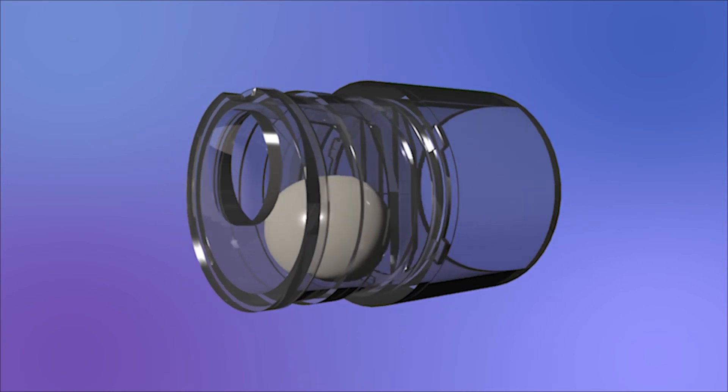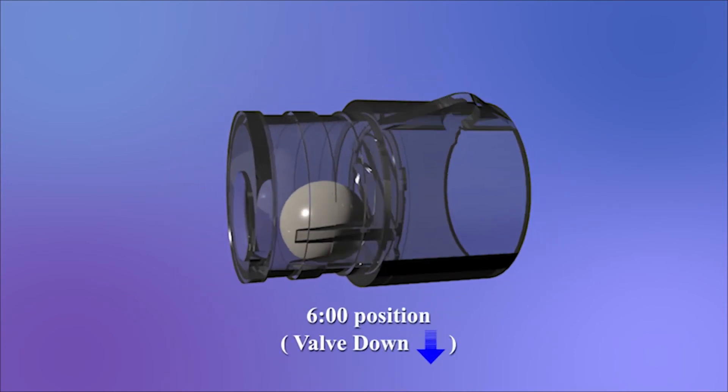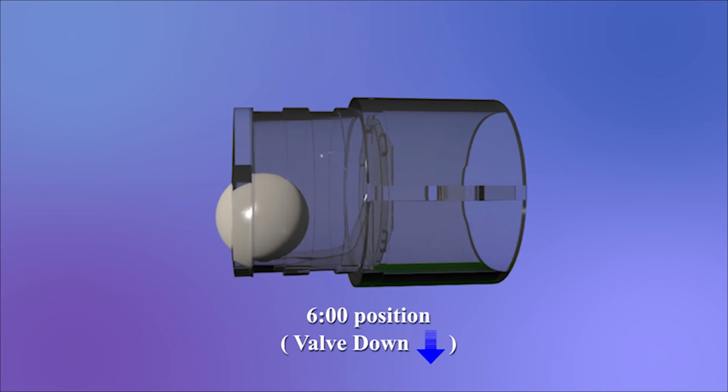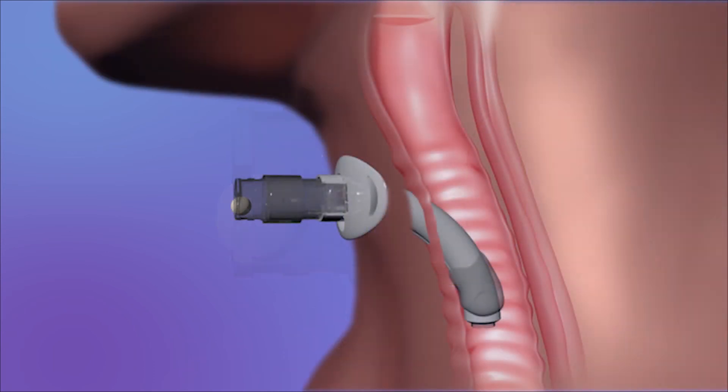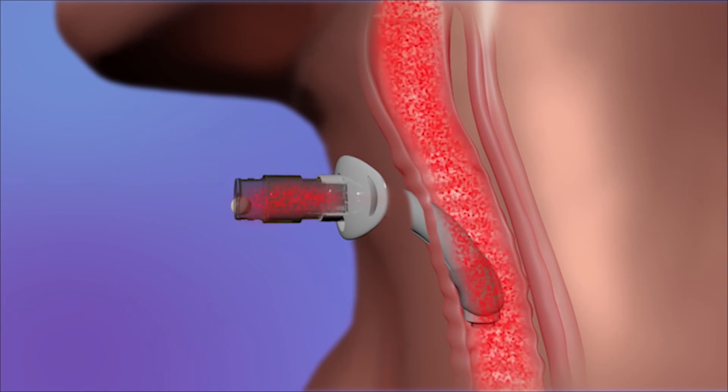When the valve is placed in the 6 o'clock position or valve down mode, the ball then automatically rolls forward along the 2.5 degree ramp towards the frontal circular opening, closing the valve and redirecting the air into the larynx, hence allowing speech.